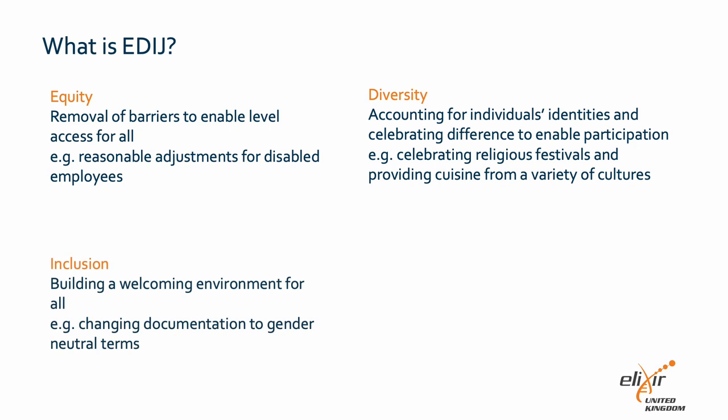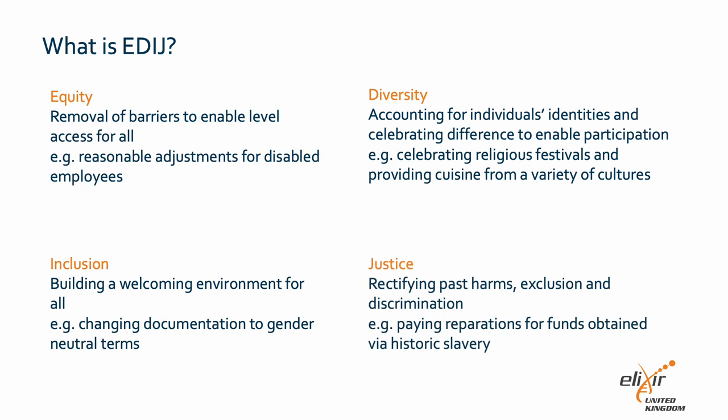Inclusion is centred on building a welcoming environment for everyone, which allows people to feel included. An example of this could be changing documentation around parental leave policies to gender-neutral terminology. Justice is about rectifying past harms, exclusion and discrimination against marginalised groups in society, which might mean things like paying reparations for funds obtained via links to slavery in the past. Together, these concepts form the basis for EDIJ work.